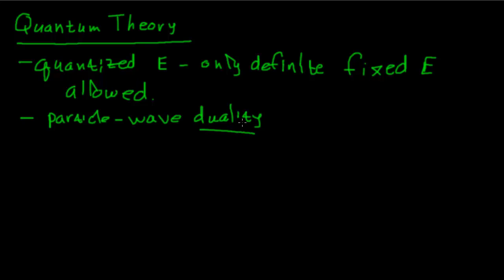Duality means something can be two things at the same time — particles and waves, both, neither, or one or the other. We also have the idea of the Heisenberg uncertainty principle, which I'll abbreviate HUP.